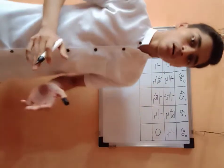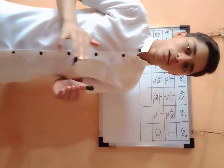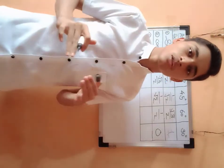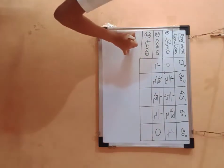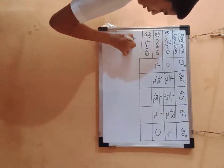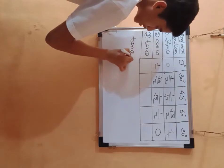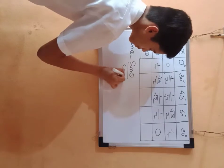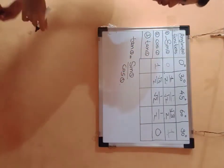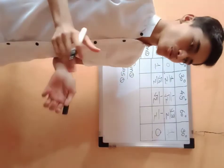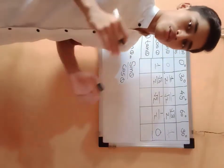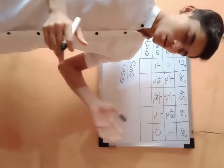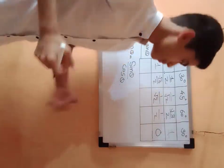Tan of θ is also given by a formula. Tan θ equals sin θ divided by cos θ. Since we know all the values of sin θ and cos θ, we can divide them to get tan θ.